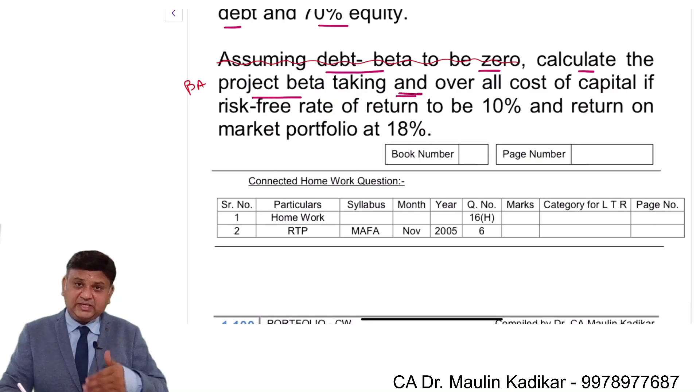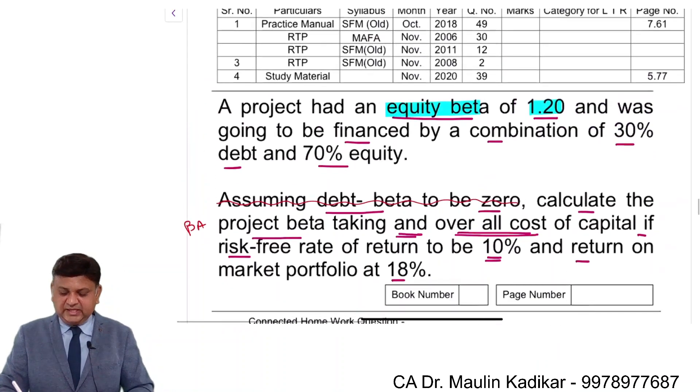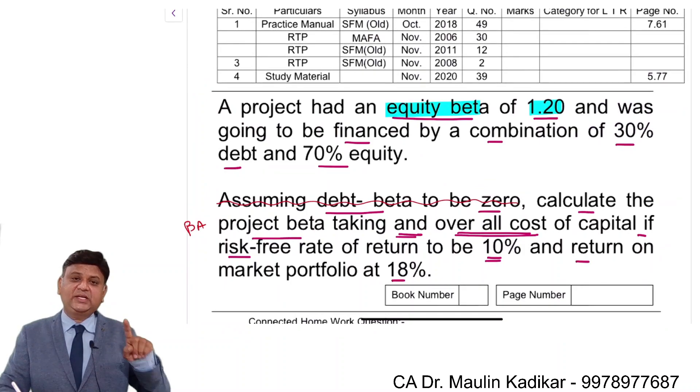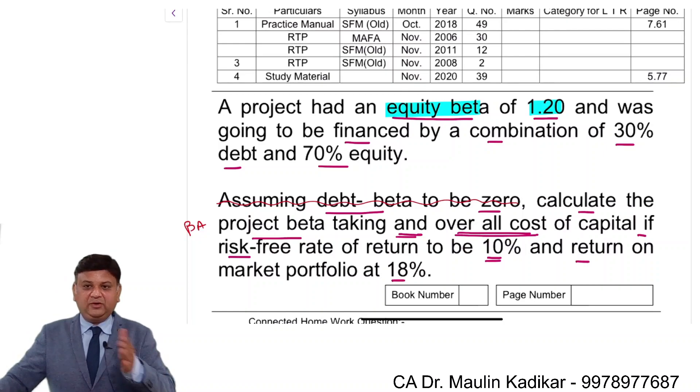And the second question, overall cost of capital or weighted average cost of capital if RF is 10% and RM is 18%. So again there are two questions. One is the calculation of the beta of asset and second is the calculation of the required data. Try to do answer of both questions on your own and put your answer in the chat box.